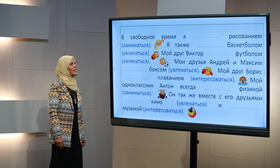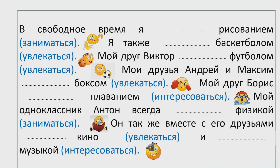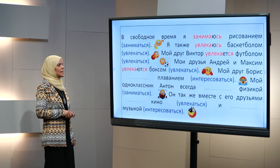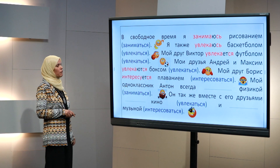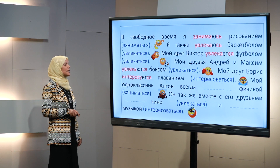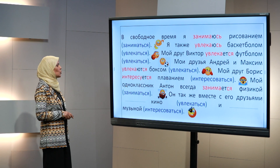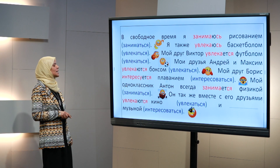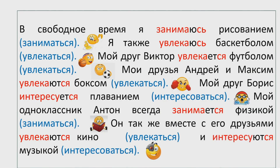Нашли ответы? Давайте проверим вместе. В свободное время я занимаюсь рисованием. Я также увлекаюсь баскетболом. А мой друг Виктор увлекается футболом. Мои друзья Андрей и Максим увлекаются боксом. Мой друг Борис интересуется плаванием. Мой одноклассник Антон всегда занимается физикой. Он также вместе с его друзьями увлекаются кино и интересуются музыкой.